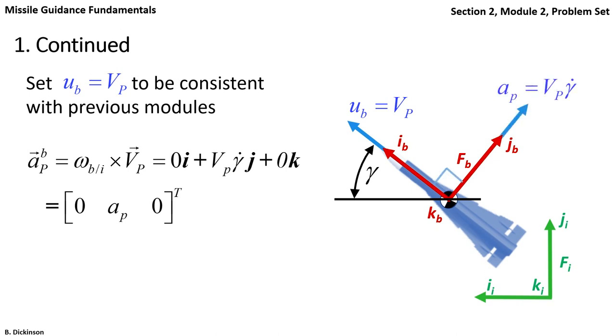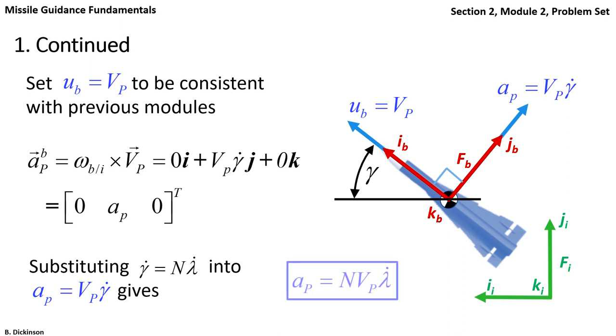We further denote the acceleration command as ap, which is simply vp times gamma dot. Substituting in the gamma dot form of pronav into the acceleration formula gives our pronav in terms of acceleration.